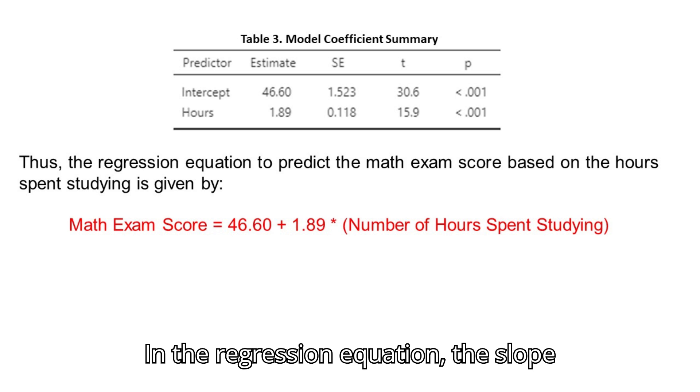In the regression equation, the slope coefficient, or number of hours in this example, is always multiplied by the independent variable, while the intercept coefficient is usually positioned after the equal sign.